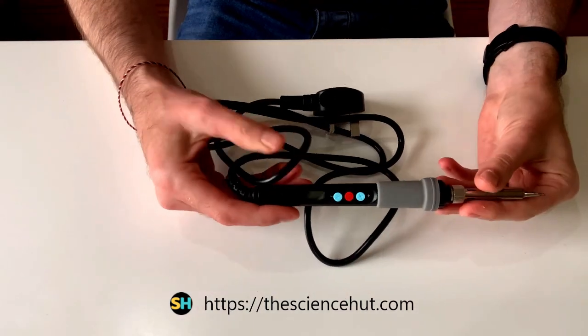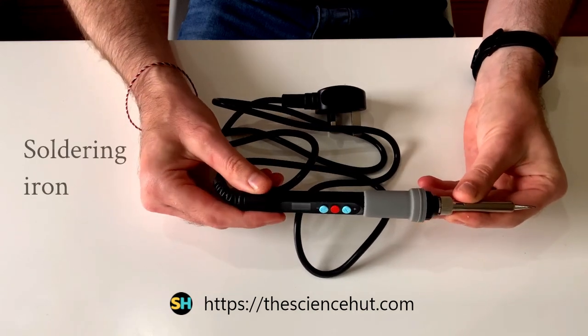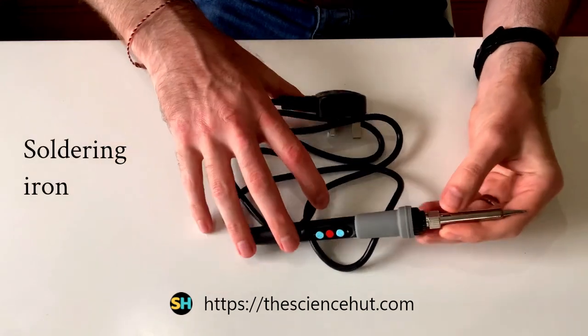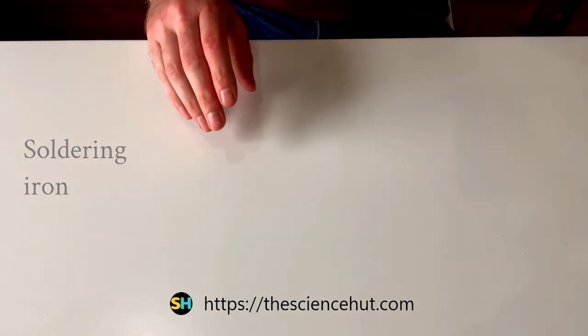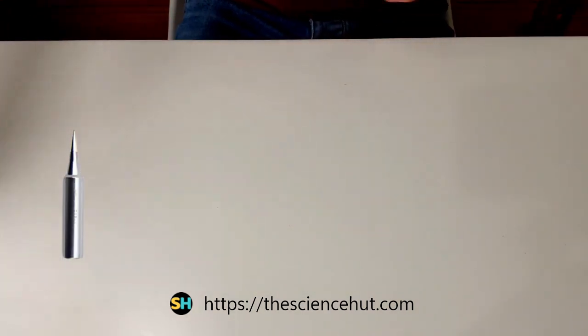First, the essentials. A standard soldering iron between 20 to 60 watts. A 1 to 2 millimeter cone tip is suitable for most projects.